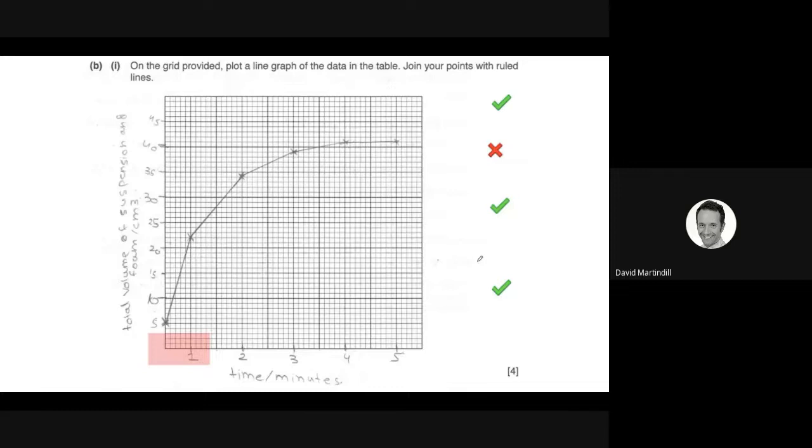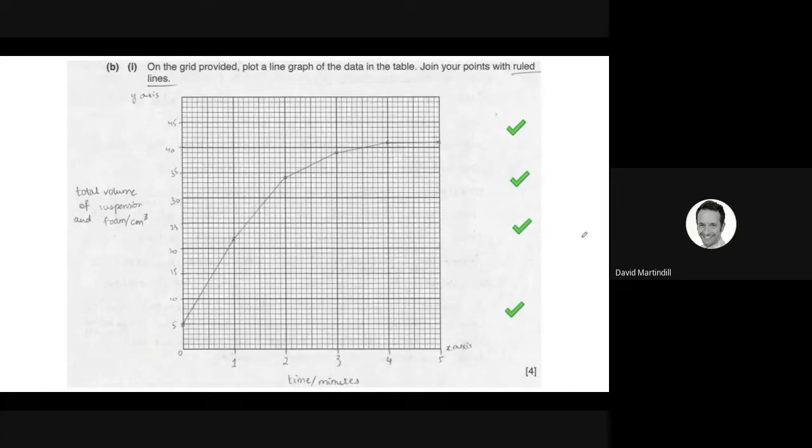This is nearly four marks. We can see that the student has drawn ruled lines here. But we haven't got an origin. There is no value at the corner. We should have zero there. So here is a fantastic graph. And that would get four marks for this particular question.